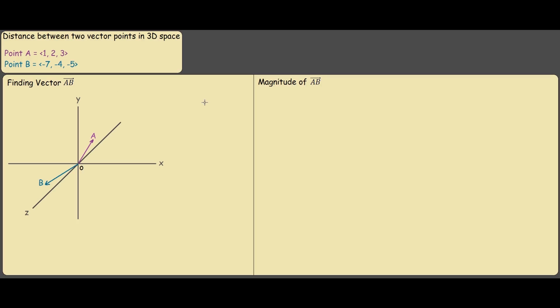So for the first step I've already graphed the vectors for you and what we're looking for is the line AB, which is this red line over here.